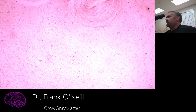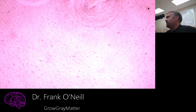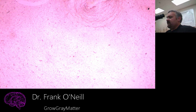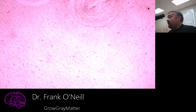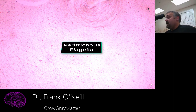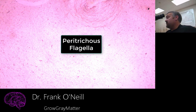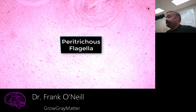Bacteria have unbelievable flagella — them swimming through water is the equivalent of you swimming through peanut butter, so they need a very sophisticated system to move around. An organism like Proteus vulgaris with peritrichous flagella can have a thousand or more flagella on its surface.